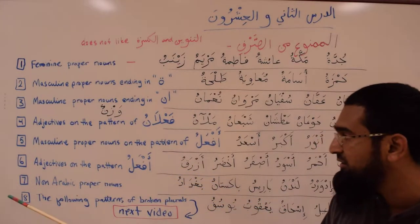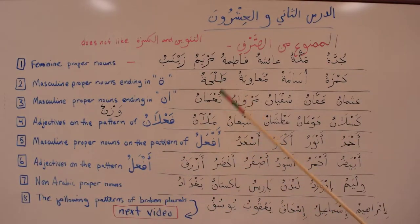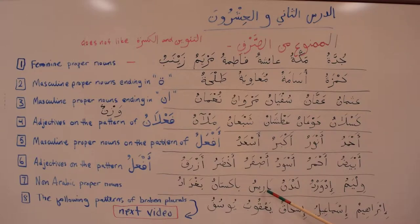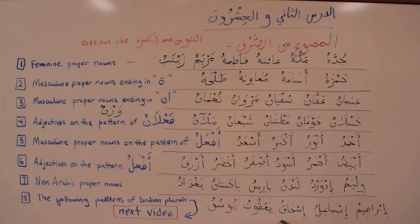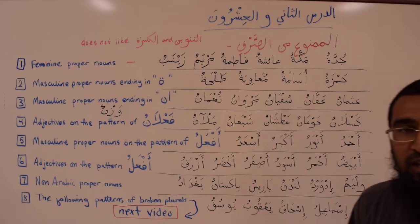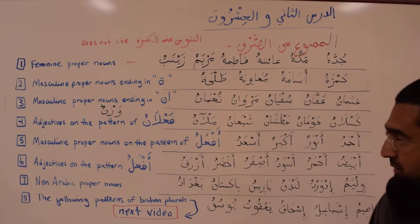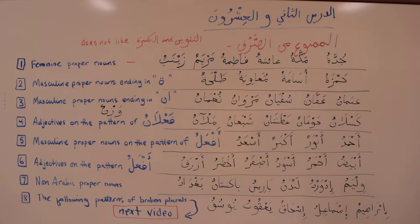Number seven: non-Arabic proper nouns. These include names like William, Edward, London, Paris, Pakistan, and Baghdad. Even names that appear in the Quran — such as Ibrahim, Ismail, Ishaq, Ya'qub, and Yusuf — are non-Arabic names, so they are ممنوع من الصرف. Even though these names may be associated with Islam or Arabs, they are not originally Arabic names.